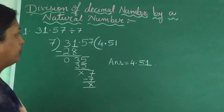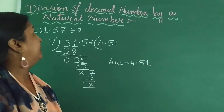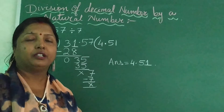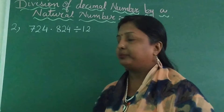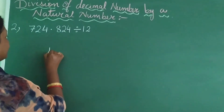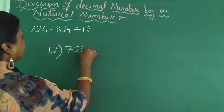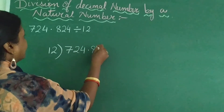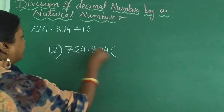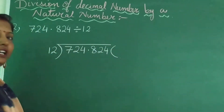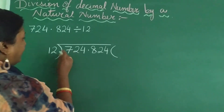So this is how you divide a decimal number by a natural number. This time we will write the question on the top. To write the question on the top, you need to keep some space on the top — that is what I have done over here. Now we will go for dividing.